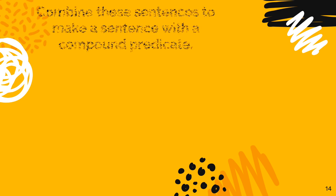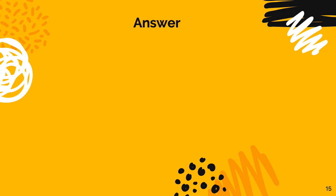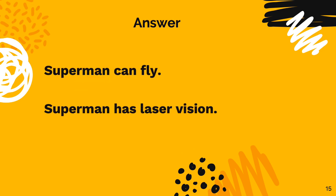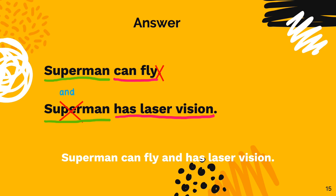Let's practice another example: 'Superman can fly' and 'Superman has laser vision.' Pause this video and combine these sentences to form one sentence with a compound predicate. The subject of these sentences is Superman, and the predicates are 'can fly' and 'has laser vision.' To combine these sentences, I will eliminate the second Superman and the period after 'fly' and add the conjunction 'and' to make: 'Superman can fly and has laser vision.'